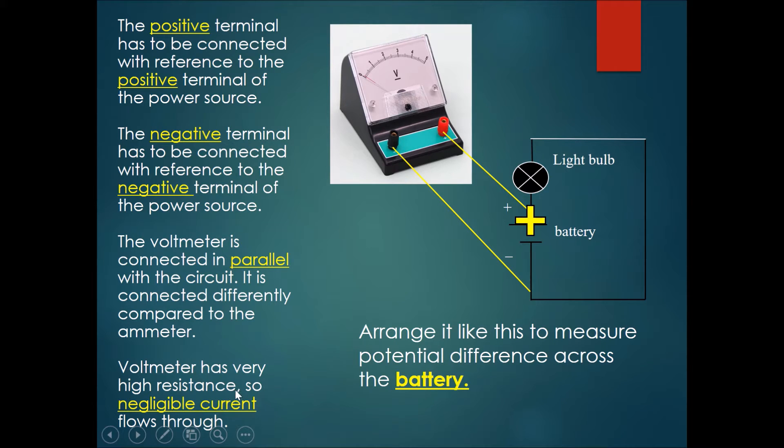The voltmeter has very high resistance. So a negligible current actually flows through the voltmeter. You always arrange the voltmeter around the object that you want to measure the potential difference of. So arrange it like this to measure the potential difference across the battery.